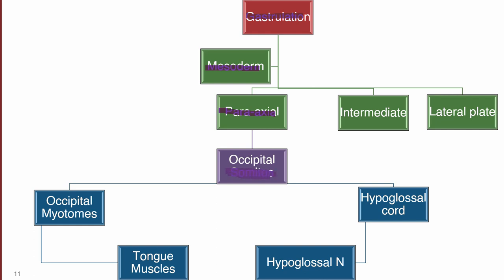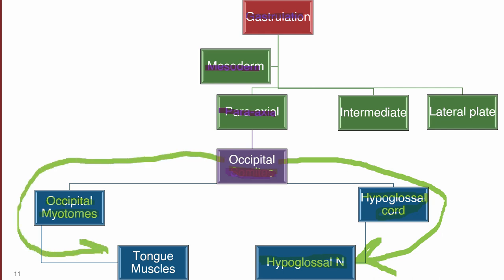The first formed somites are the occipital somites, which have two structures: occipital myotomes and the hypoglossal cord. The hypoglossal cord gives rise to the hypoglossal nerve. The occipital myotomes, developing from occipital somites, give rise to the muscles of the tongue. Since the hypoglossal nerve develops from the same structure — the occipital somites — as the muscles of the tongue, all motor innervation of the tongue will be from the hypoglossal nerve. There is one exception which we will discuss later.